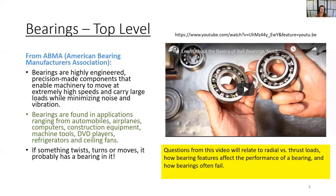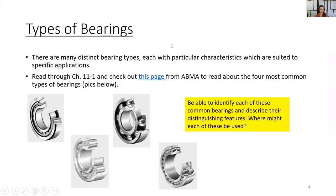I like that video because it gives really close-up high-resolution pictures of bearings. Questions from this video will relate to radial versus thrust loads, how bearing features affect the performance of a bearing, and how bearings often fail. There are many distinct bearing types, each with particular characteristics suited to specific applications. Chapter 11-1 and the ABMA hyperlinked page give good information about the four most common types of bearings. In the quiz you'll be asked to identify each common bearing, describe their distinguishing features, and identify where each could be used.